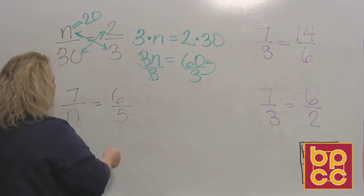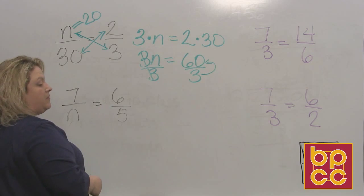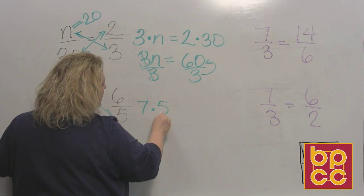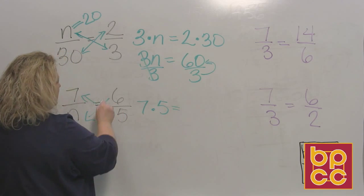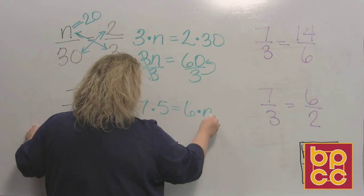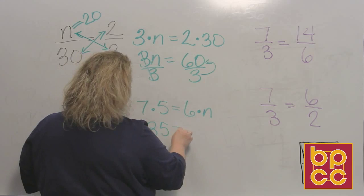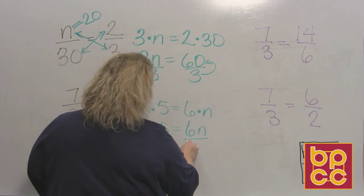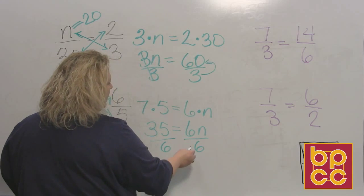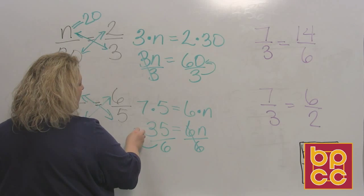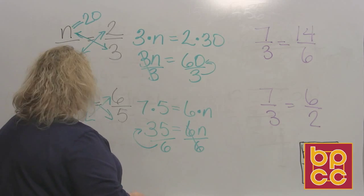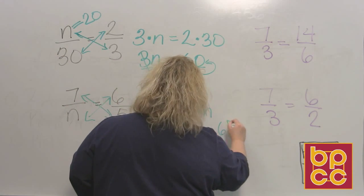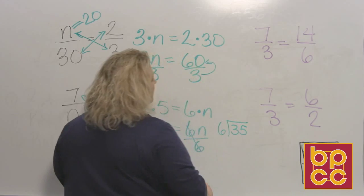Now I have another one: 7 divided by something is equal to 6 divided by 5. So I'm going to do cross products. 7 times 5 is equal to 6 times N. That means 35 is equal to 6N. And I do my division. When I do my division, now this doesn't divide evenly, and that's okay. 6 divides into 35...